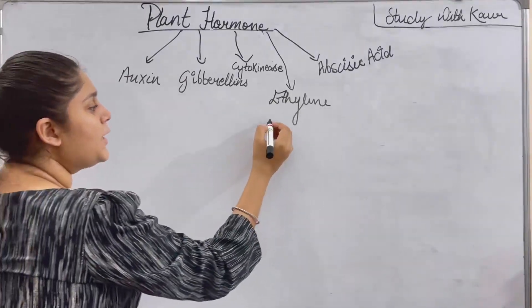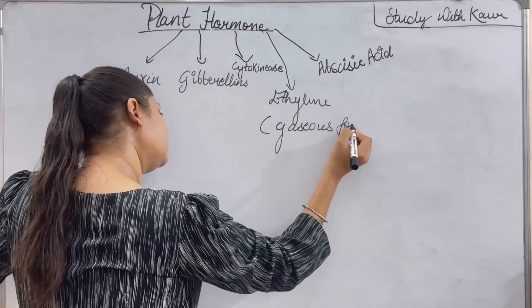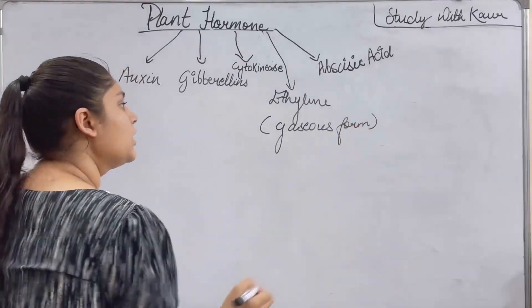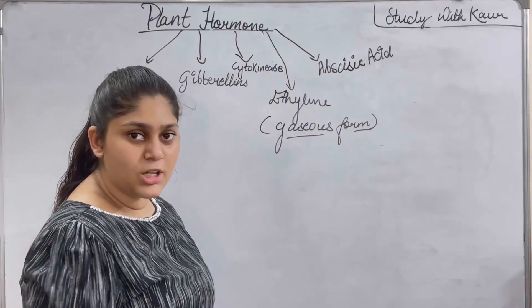Ethylene is the only one which is in a gaseous form. This is your plant chemistry. What is ethylene? So, it is the only one which is present in a gaseous form.